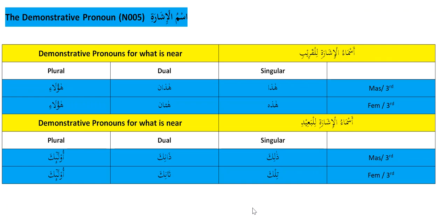Bismillah ar-Rahman ar-Rahim. This lesson is the demonstrative pronoun lesson, N005 in Arabic: ismu al-ishara. The word 'ism' means name, and 'al-ishara' means to point.